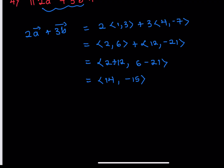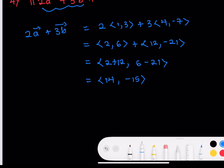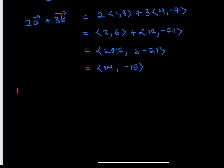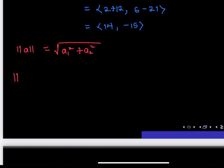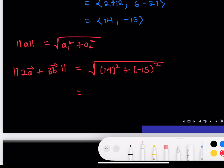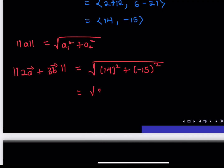So our vector 2a plus 3b is (14, -15). Now we compute the norm. By definition, the norm of a two-dimensional vector (a1, a2) is the square root of a1 squared plus a2 squared. So the norm of 2a plus 3b equals the square root of 14 squared plus (-15) squared, which gives us the square root of 421.